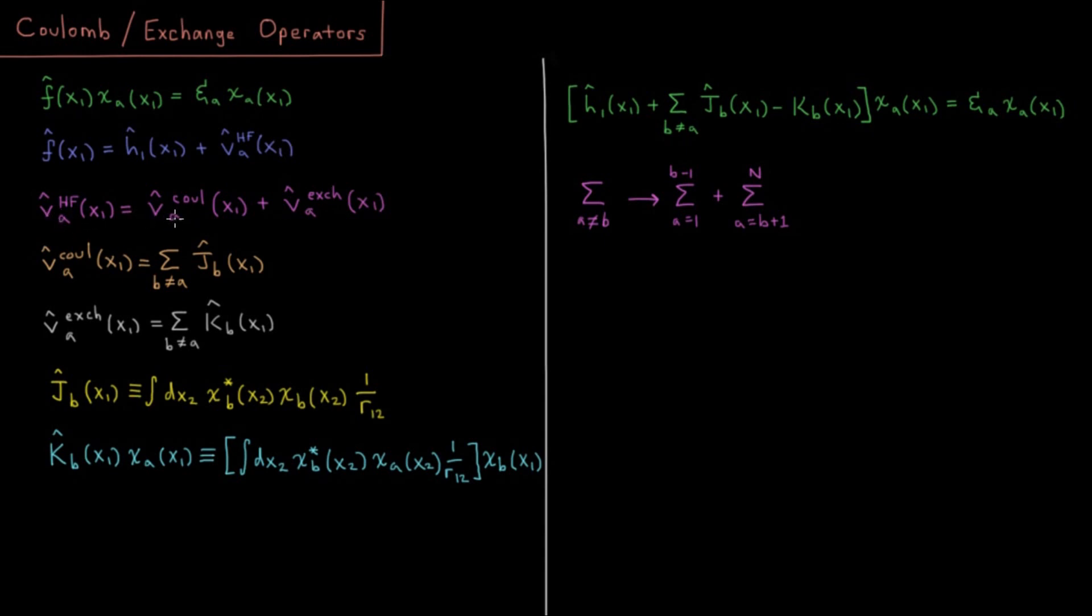And notice I have this subscript a here because these are each of the operators when we have an electron in orbital A, or spin orbital A.